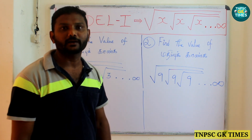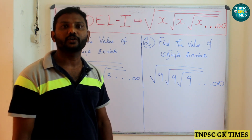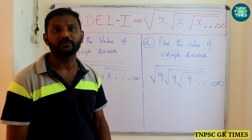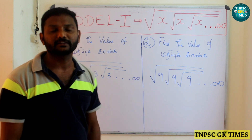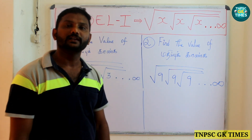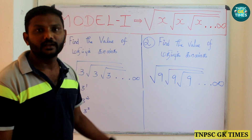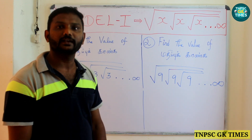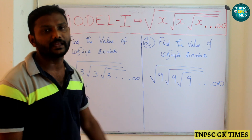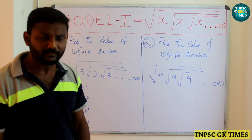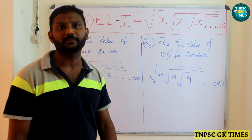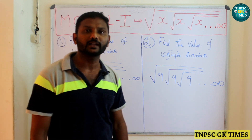Hi friends, today we are going to talk about the square root — specifically the complicated sums. In recent times, there are some sums in our TNPSC exams. We are also going to cover SSC and RRB. In the square root, there are 5 types, 5 models. We are going to talk about all 5 models.